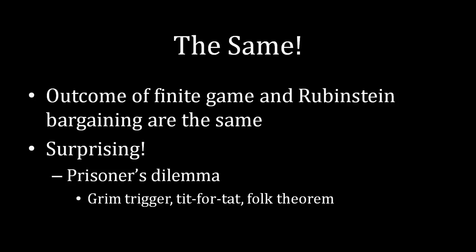Now you might be asking yourself: isn't that obvious? Why are you even bothering telling me this? Well, actually it's very surprising that this is true. If you've taken a little bit of game theory — maybe half a semester — you're probably familiar with repeated games. If you've seen the Prisoner's Dilemma as a repeated game, what we get with a finite number of periods is exactly one solution, no matter how many different periods we have. You could have a trillion periods, and it's still the exact same outcome — the prisoners defect on each other in every single stage.